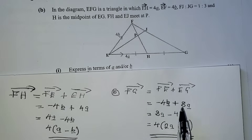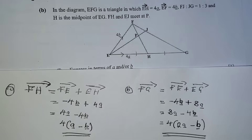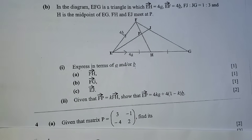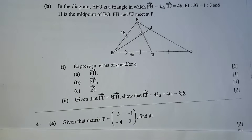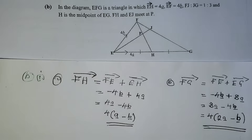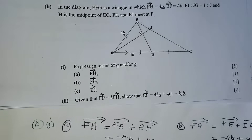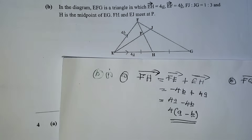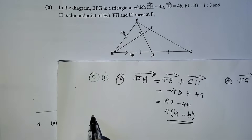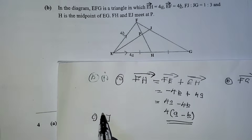Let's go to part c. We are asked to calculate vector EJ. So to calculate vector EJ, we are going to say — listen very well — E is here, J is there. Vector EJ equals EF plus FJ.